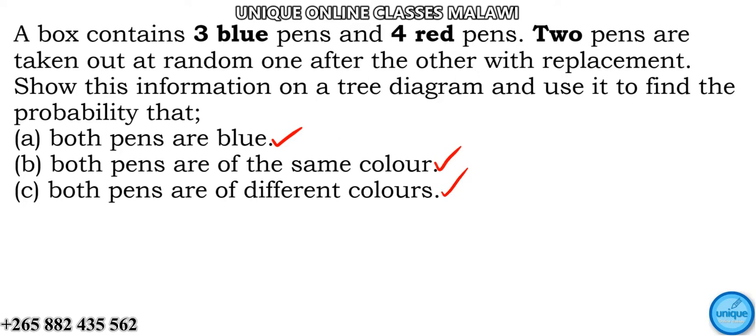So the solution: Total pens would be the sum of 3 and 4, which is 7. The pens are taken out at random one after the other with replacement. This point is very important because it will guide us.